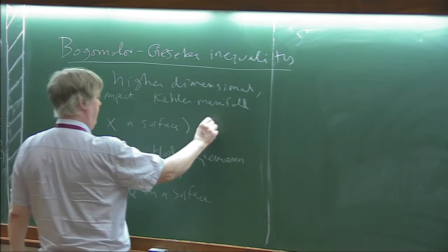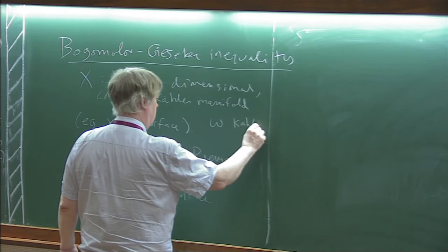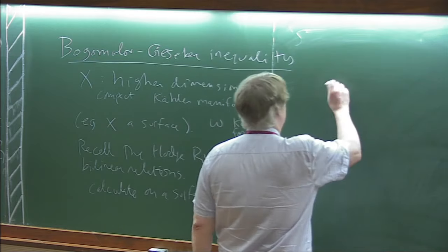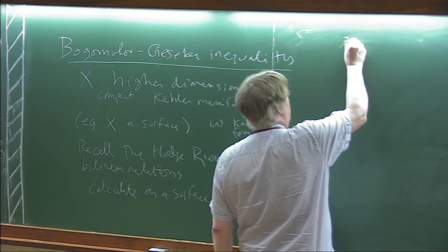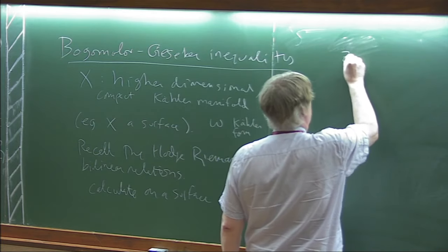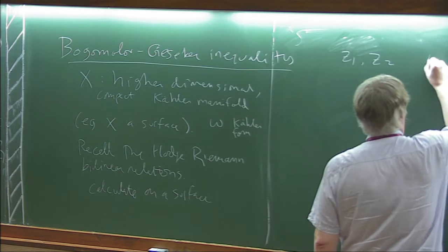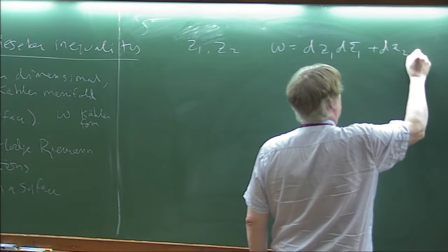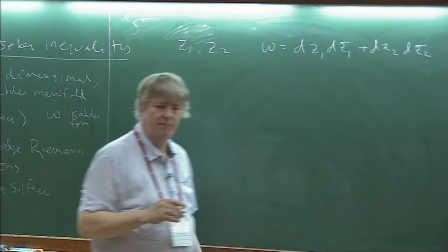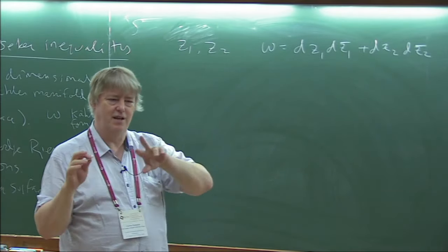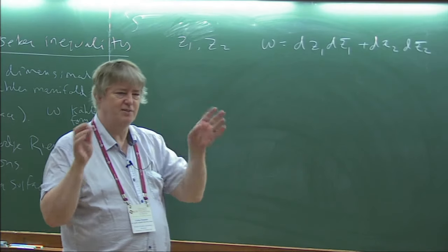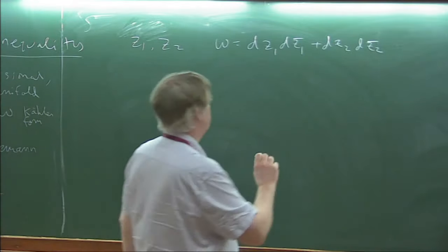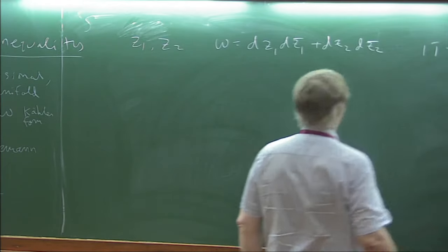Here omega is the Kähler form. To simplify, let's use coordinates dz1 and dz2, and suppose that omega equals dz1 dzbar1 plus dz2 dzbar2. I'm going to be ignoring some global constant—the main point is a sign change, modulo some square root of minus one or something. Let's write this as 11bar plus 22bar for short.